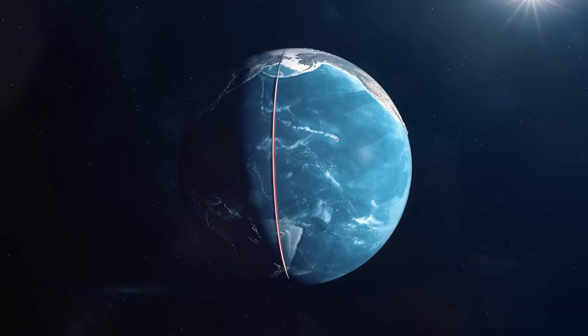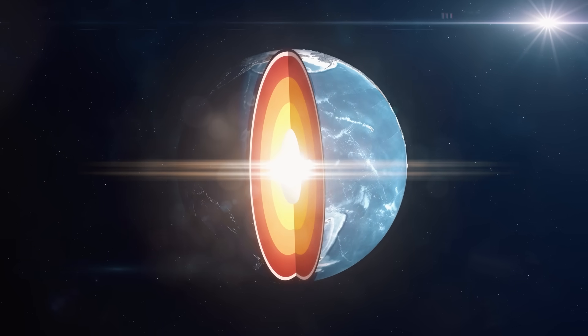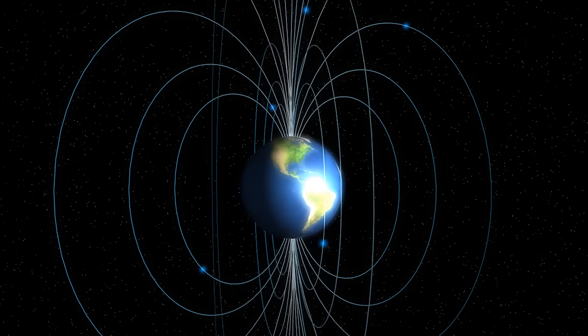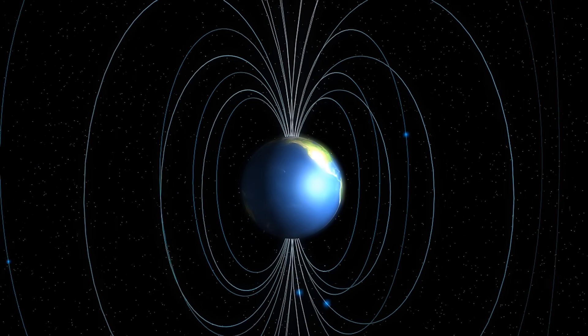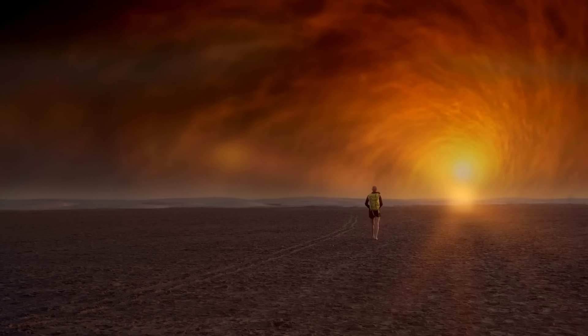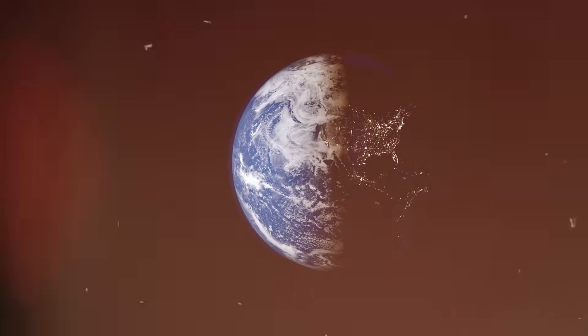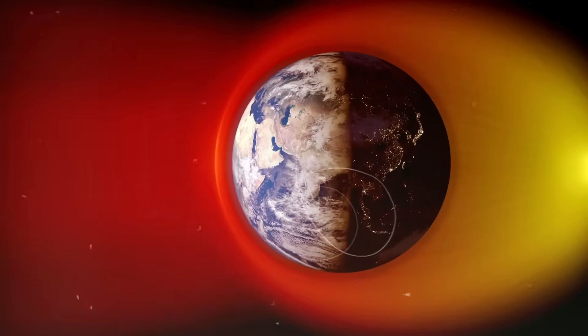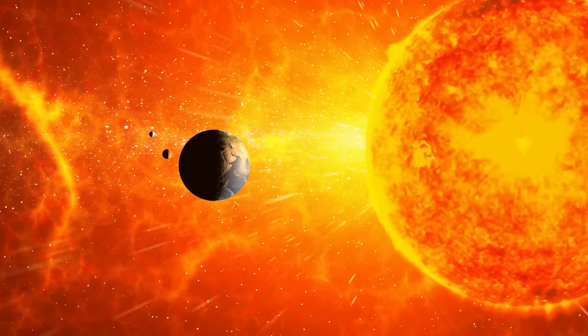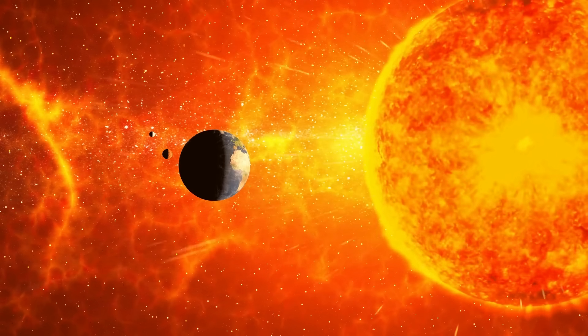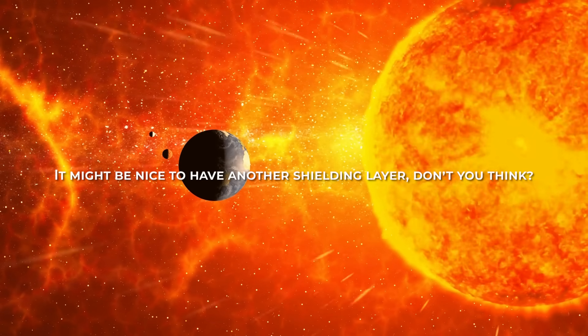The Earth's magnetic field is a complex, dynamic force field that surrounds the Earth and is created by the movement of molten iron in the Earth's core. The Earth's magnetic field is shaped like an oblate spheroid, with a slight tilt relative to the Earth's axis of rotation. One of the main functions of the Earth's magnetic field is to shield the Earth from cosmic radiation. It acts as a barrier, protecting the Earth and its inhabitants from the harmful effects of these particles. When solar wind and cosmic radiation particles enter the Earth's magnetic field, they are deflected and redirected away from the Earth, rather than hitting the Earth's surface. The Earth's magnetic field is not a perfect shield, however. Some solar wind and cosmic radiation particles are able to penetrate the Earth's magnetic field and reach the Earth's surface. So it might be nice to have another shielding layer, don't you think?